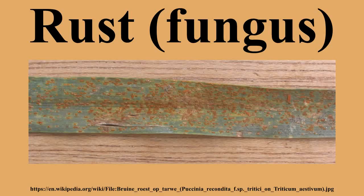Hemileia vastatrix: primary host is the coffee plant, with unknown alternate host — heteroecious. Phakopsora meibomiae and P. pachyrhizi: primary host is soybean and various legumes, with unknown alternate host — heteroecious. Puccinia coronata: oats are the primary host, Rhamnus spp. is the alternate host — heteroecious and macrocyclic. Puccinia graminis: primary hosts include Kentucky bluegrass, barley, and wheat; common barberry is the alternate host — heteroecious and macrocyclic.